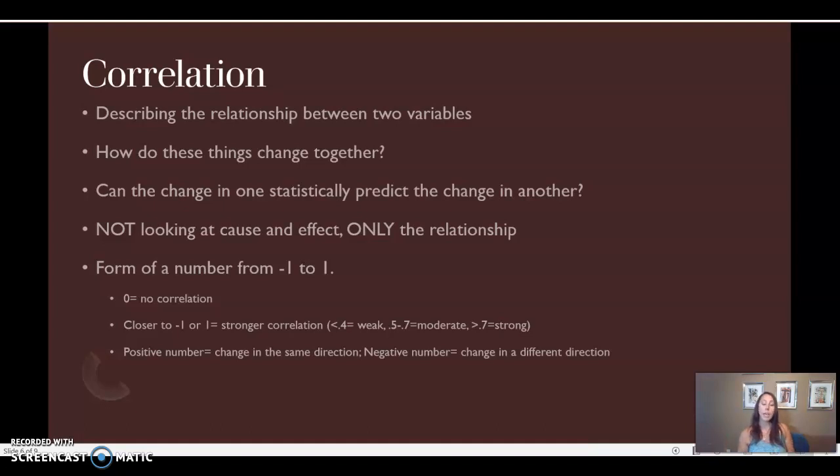A positive number indicates a positive correlation, which means they are changing in the same direction. As one goes up, the other goes up. As one goes down, the other goes down. That's an important point to remember. However, it can be a positive relationship and they can both be going down together. Positive just means they're moving in the same direction.